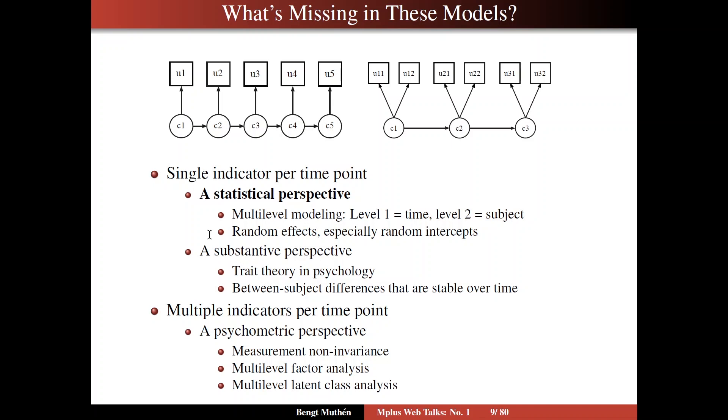And from that statistical perspective, we are going to talk about random effects, especially random intercepts. And then we are going to take a look at the substantive perspective, and look at latent trait theory in psychology. And that leads us to consider between-subject differences that are stable over time.